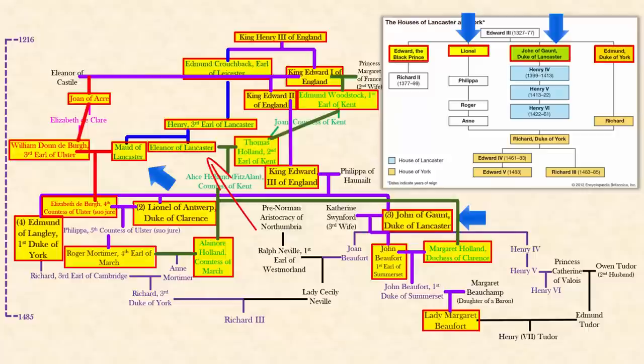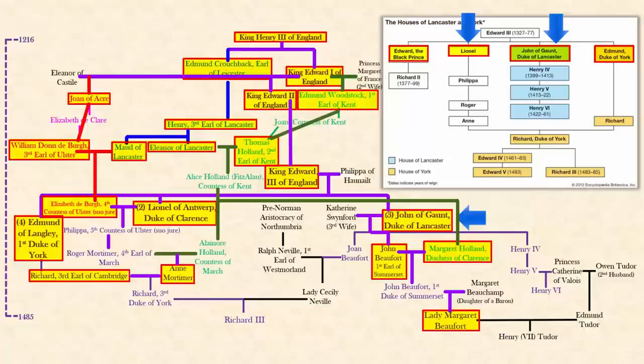All that overlapping of royal blood created Anne Mortimer, who married another descendant of the King of England, Richard, Duke of Cambridge. He was the grandfather to Richard III, and he too came from a royal line. His father was Edmund, who, as I showed you here, was the fourth son of King Edward III. Together, the Duke of Cambridge and Anne Mortimer had Richard's father, also named Richard, but the Duke of York.